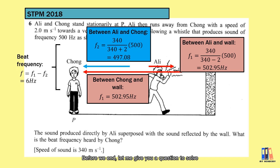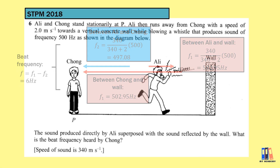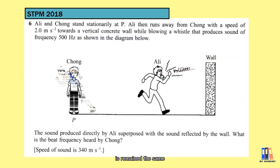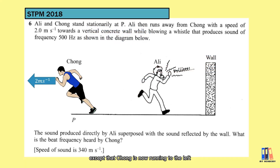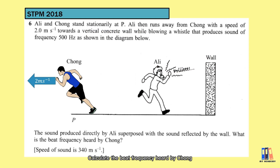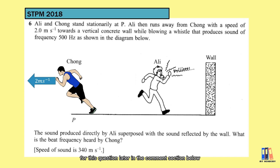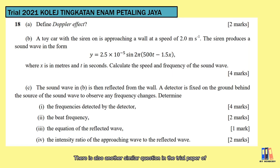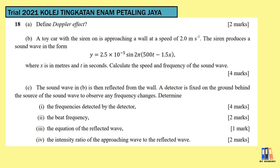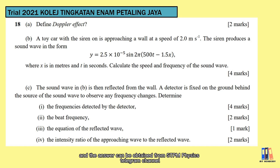Before we end, here is a practice question: the situation remains the same, except that Zhong is now running to the left at 2 m/s — calculate the beat frequency heard by Zhong. I will provide the answer in the comment section below. There is also a similar question in the trial paper of College Tingkatan Enam Petaling Jaya 2021; you may try it and find the answer on the STPM Physics Telegram channel.